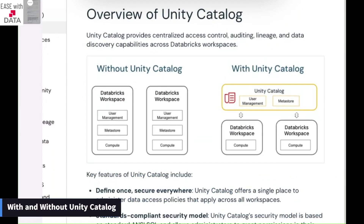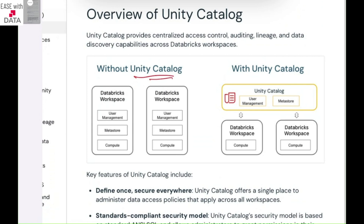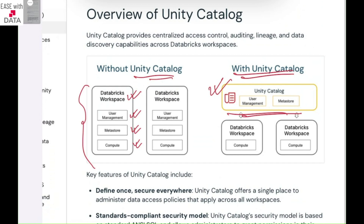Where exactly does Unity Catalog stand out? Without Unity Catalog, you have to manage each Databricks workspace individually — all the users, metastore, compute, and everything needs to be managed individually on each workspace. With Unity Catalog, you can maintain everything from a single place. It gives you centralized governance for all of your workspaces from a single place.